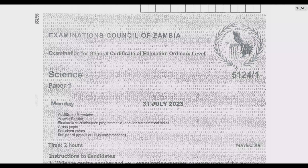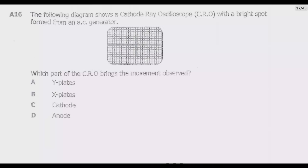Welcome viewers to the fourth episode in a series focused on the 2023 GCE Science Paper 1, which is Physics. In the previous three episodes we covered questions 1 through 15, so in this episode we're going to start with question 16. Please consider subscribing to my channel so that every time I upload a video you get the notification, and if you find this video helpful, consider liking it to help my channel reach as many people as possible.